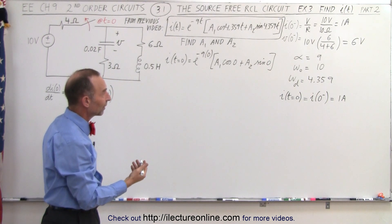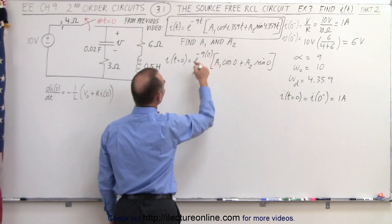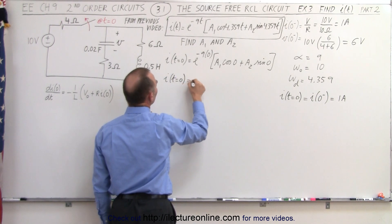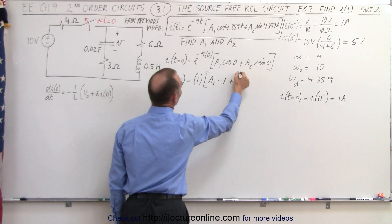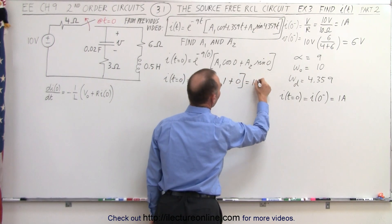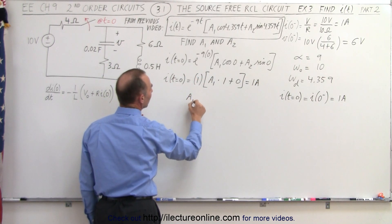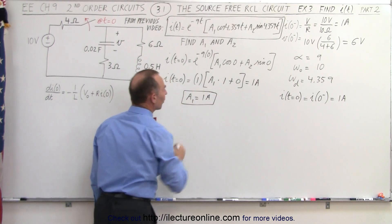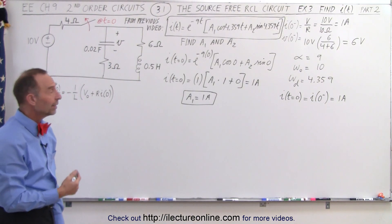The sine of zero is zero, the cosine of zero is one, and e to the zero power is one. So we have i at t equals zero equals one times a1 times one plus zero, and we know that equals 1 amp. Therefore a1 is equal to 1 amp. We've solved the first part and now know the value for a1.